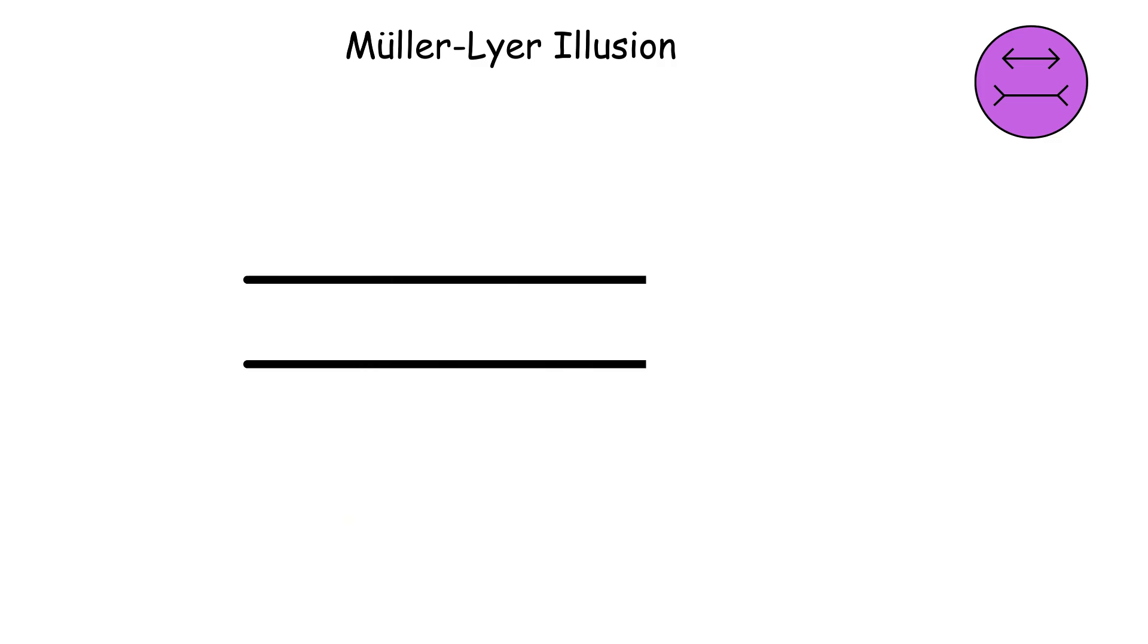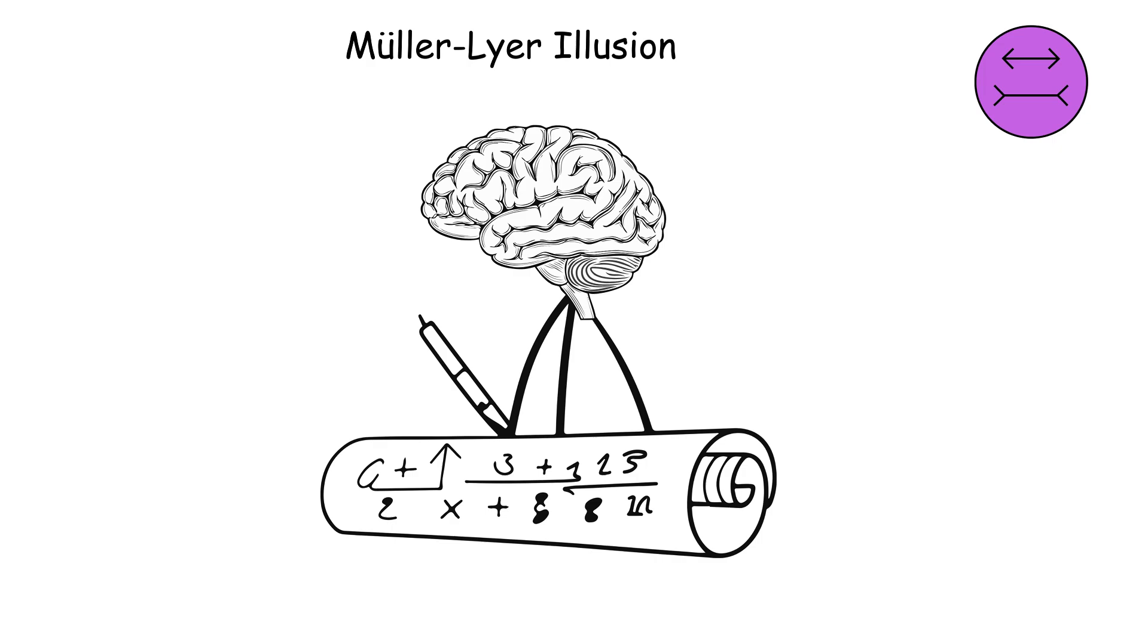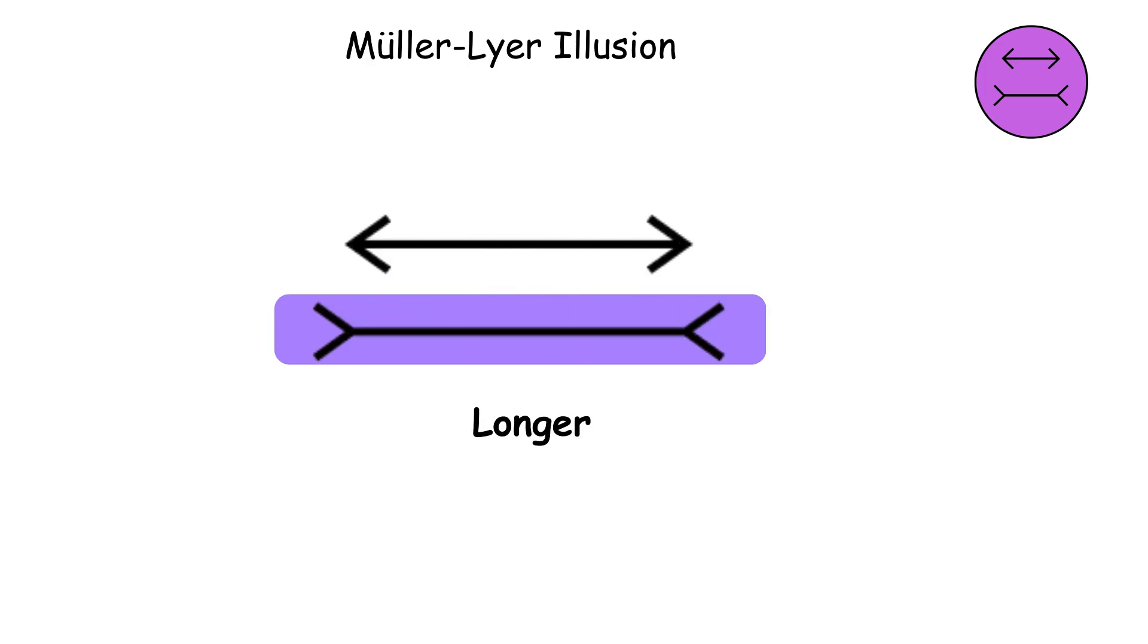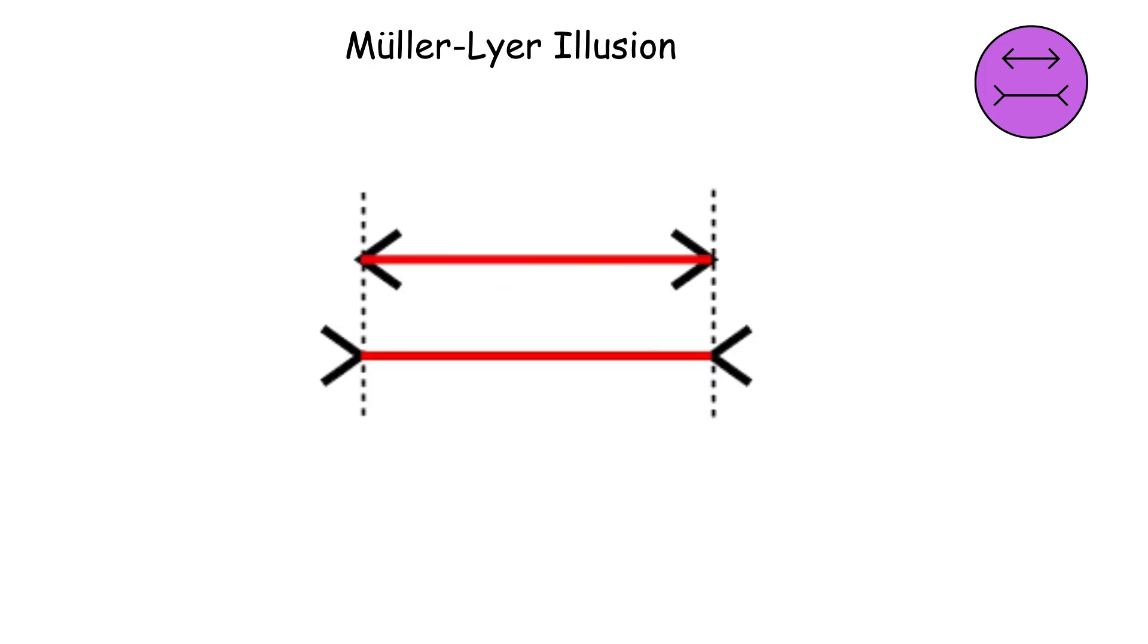You've got two lines that are exactly the same length, but one has arrows pointing outward at the ends, while the other has arrows pointing inward. Your brain swears the line with outward arrows is longer, but grab a ruler and you'll see they're identical.